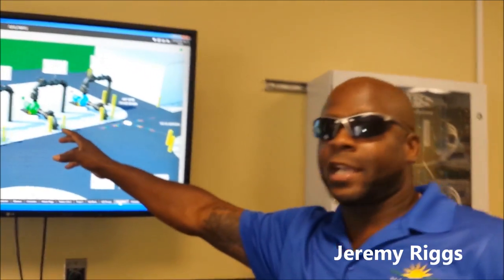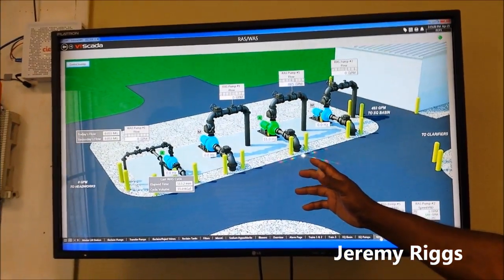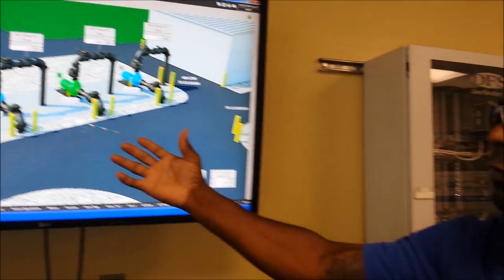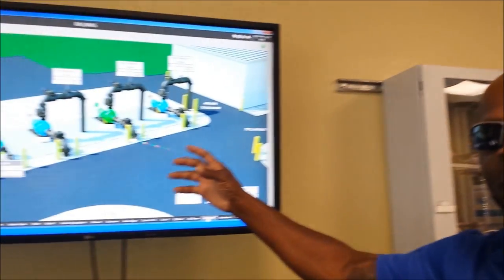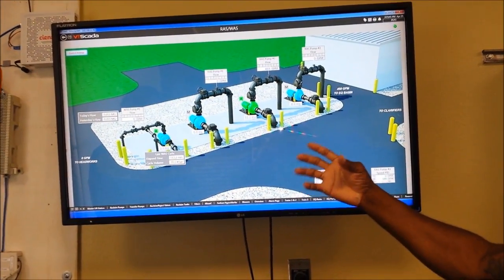These are your RAS and WAAS pumps, which is called your return activated sludge and your waste activated sludge. And this is a very essential part of the process because this determines what you need to return back to the process and what you need to get rid of throughout this biological process. Your bugs have a tendency, like we do, how we age, the bugs age.